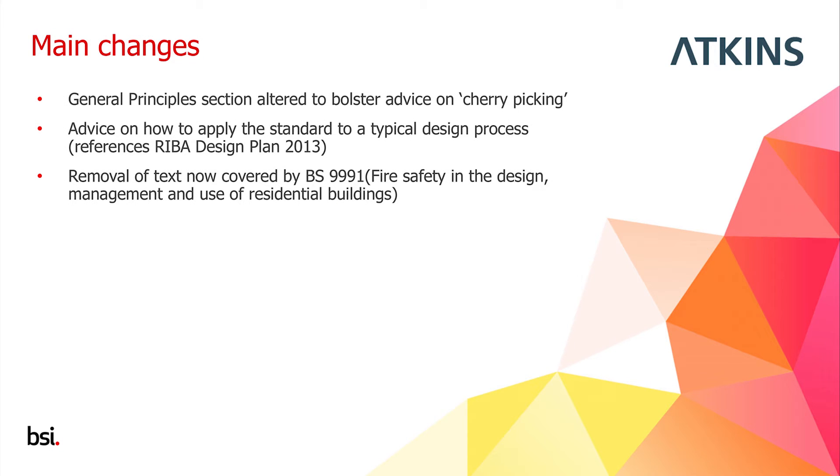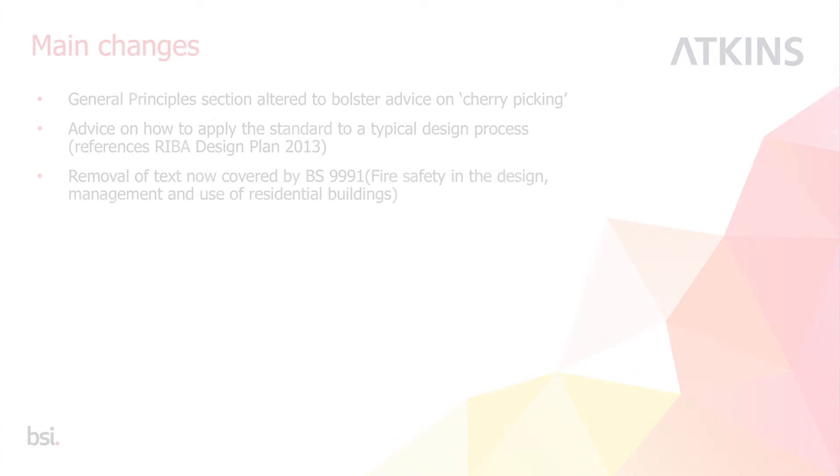Text covered by BS9991 — fire safety in the design, management, and use of residential buildings — has been removed from BS9999. Residential buildings used to be covered in BS9999 and BS5588 Part 1, but standalone residential design is now in the separate standard BS9991. However, guidance on residential aspects has been retained where it applies to mixed-use buildings — for example, retail on the ground floor, offices above, and residential at the top — which is very common in towns and cities.